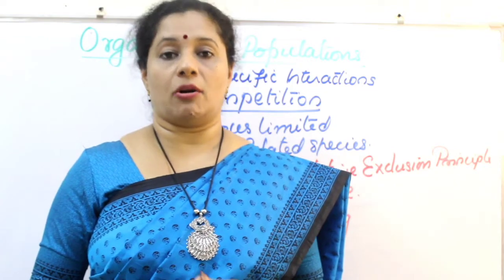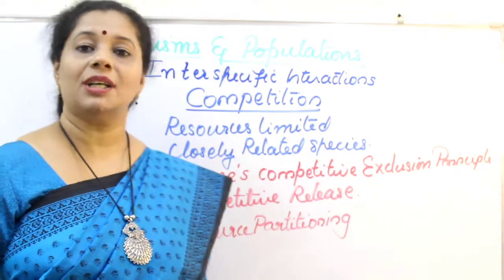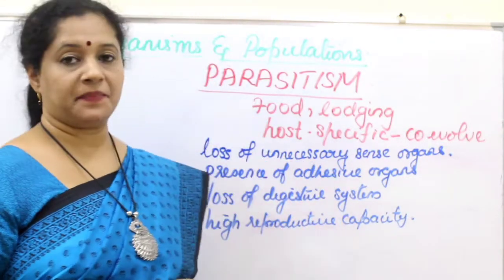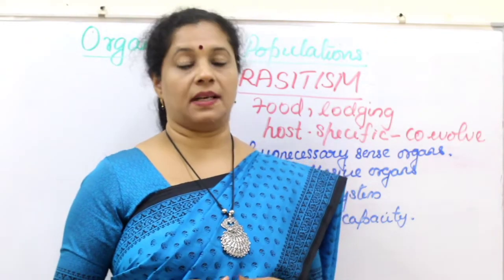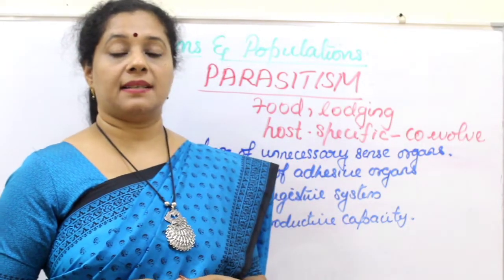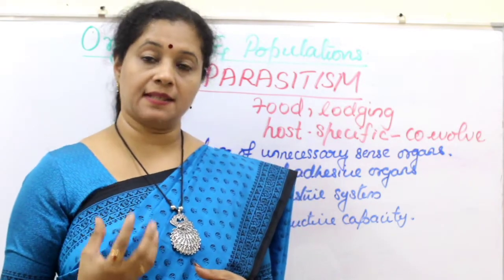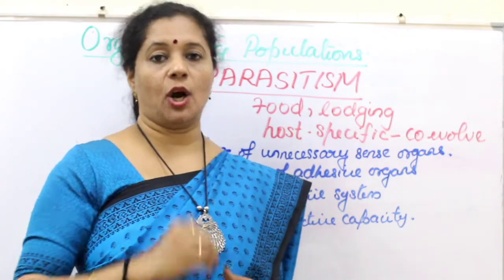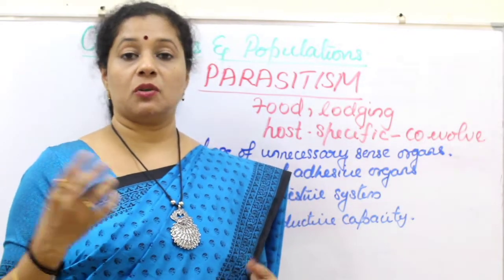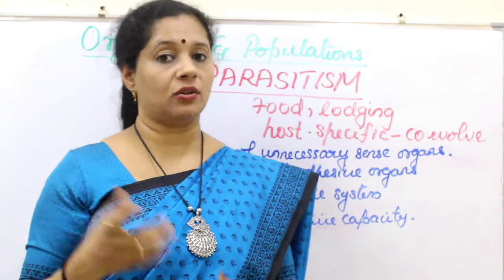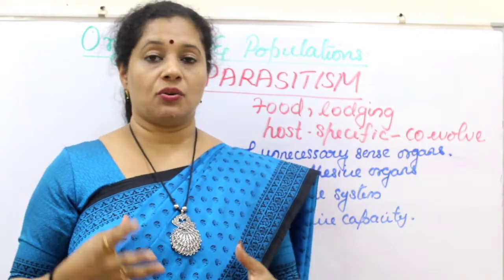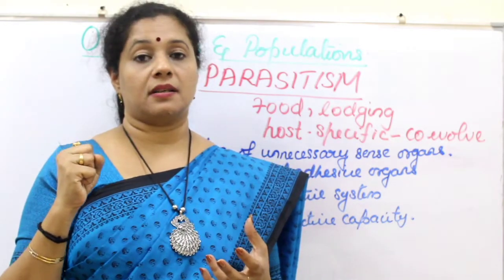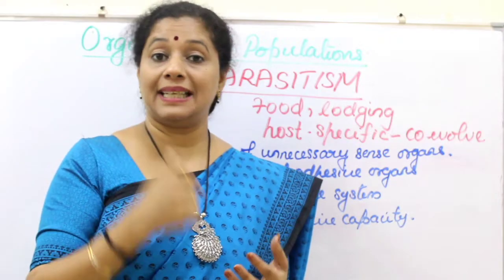This is all about competition — these theories are very important when we talk about it. The next inter-specific interaction is parasitism. Parasitism means an organism of one species gets free food and accommodation from another species, called the host species. Mosquitoes are not considered parasites because they come for blood and go — they are not living on our body. Parasites live on or in our body and take nutrients; they harm us but don't kill us.